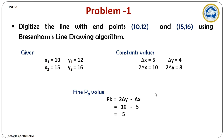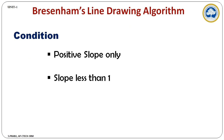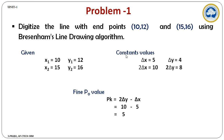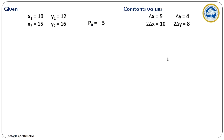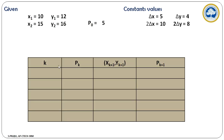Before calculation, we should check the condition of Bresenham's line drawing algorithm: the slope must be positive and the value must be less than 1. In this calculation, we calculate from the lower value to the higher value. The slope must be positive and delta x must be greater than delta y, so the slope value is always less than 1. We now draw the tabular column. It contains k value, where k denotes the number of steps starting from 0. Pk is the decision parameter value, and the next calculated coordinate values are represented as (xk+1, yk+1).